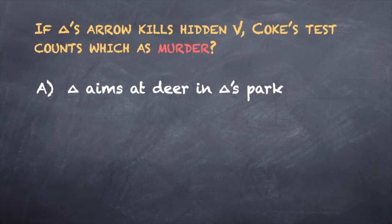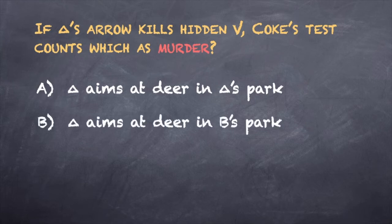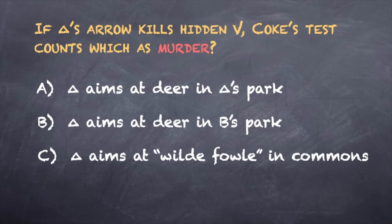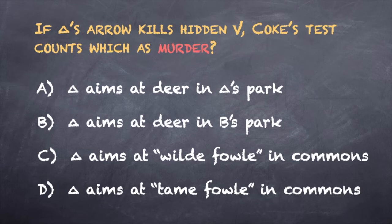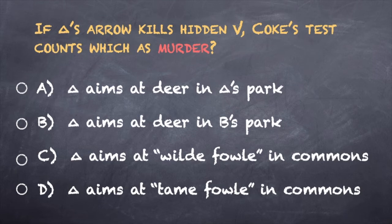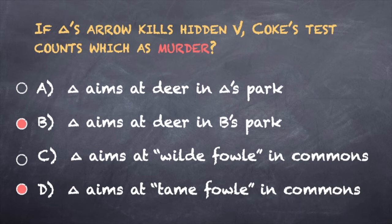Case A: the defendant was aiming at a deer in the defendant's own park. Case B: the defendant was aiming at a deer in somebody else's park, where he wasn't supposed to be. Case C: the defendant aims at a wild fowl in the commons, where everyone is free to come and go. Case D: the defendant aims at a tame fowl in the commons. There is no predicate felony in case A — the defendant is hunting on his own estate. But in case B, the defendant is poaching, a felony. In case C, a wild fowl is for the taking. But in case D, the tame fowl is not for the taking, and the defendant again commits a felony. So the defendants in cases B and D can be found guilty of murder, even though they exercised all care while hunting.